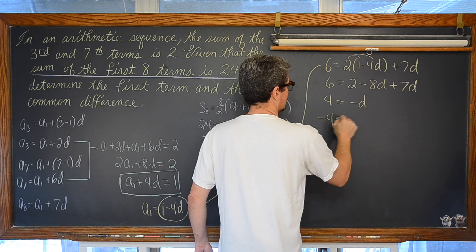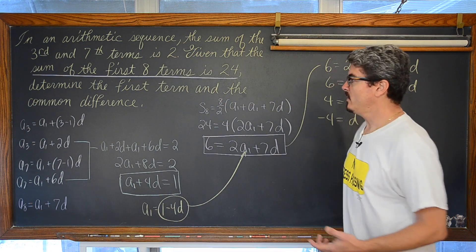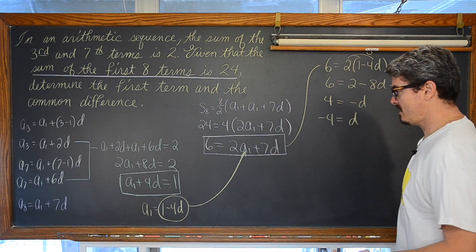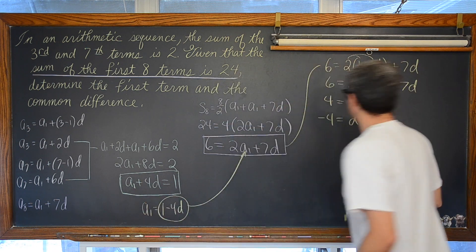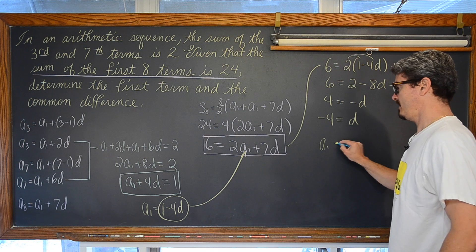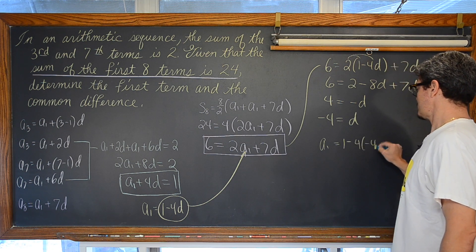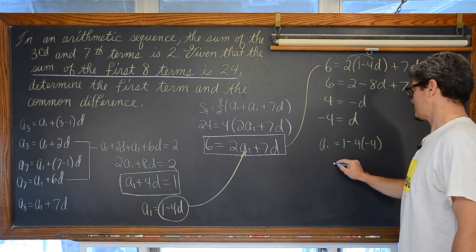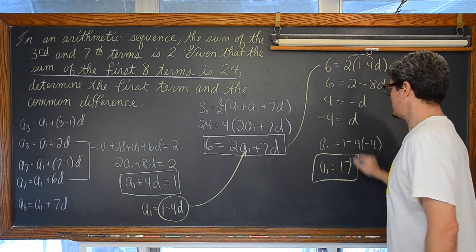We have 4, after we subtract by 2, is equal to negative 8 plus 7 is negative 1d. And negative 4 is our common difference. Well, now that we know what our common difference is, we can go up here and say that, using this relationship here, that a sub 1 is equal to 1 minus 4 times d which is negative 4. That is 1 plus 16. a sub 1 is equal to 17.